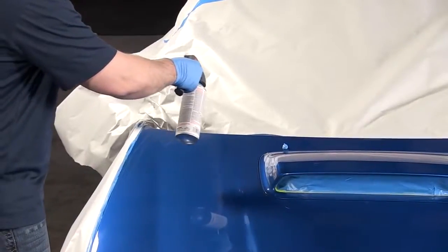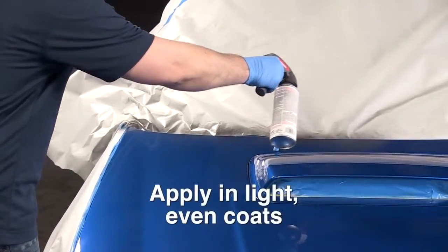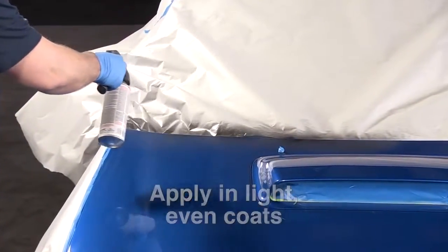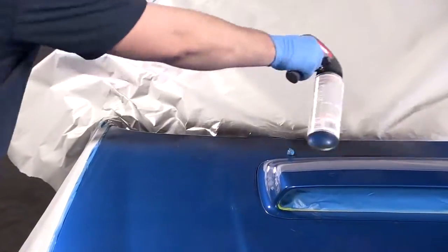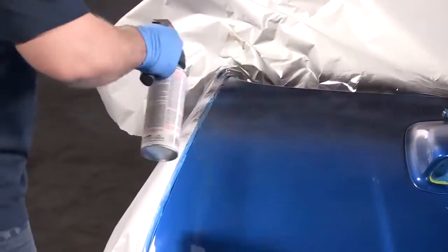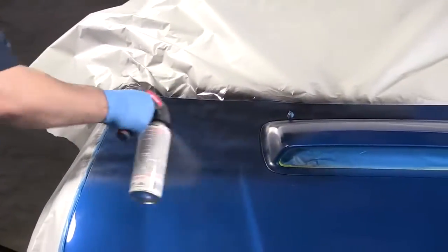When you begin to apply Peel Coat, it's important to apply a very light mist coat. As you spray, hold the can 8 to 12 inches from the surface. Use a steady back-and-forth motion, slightly overlapping each pass.